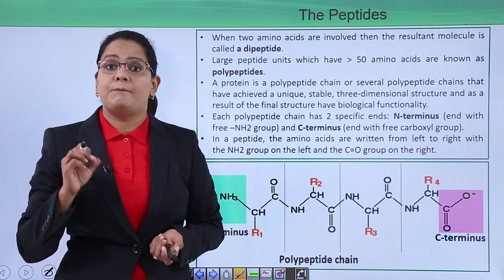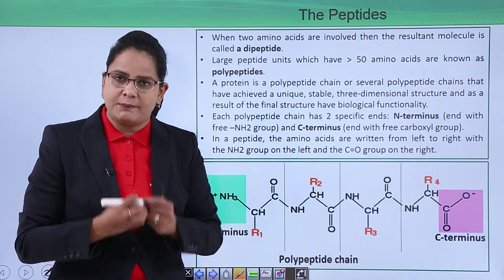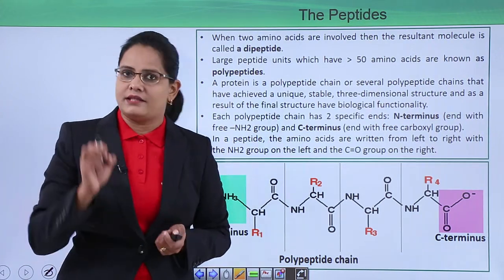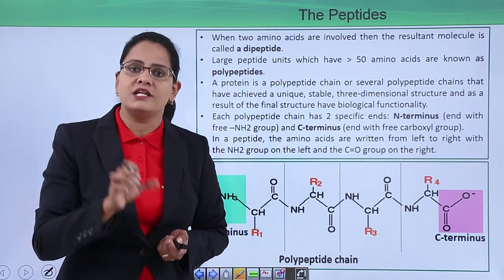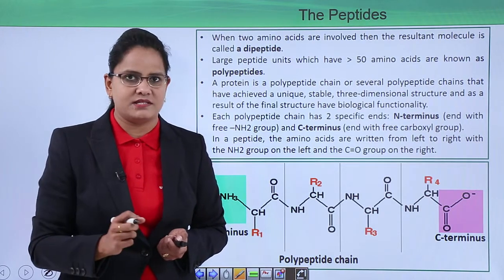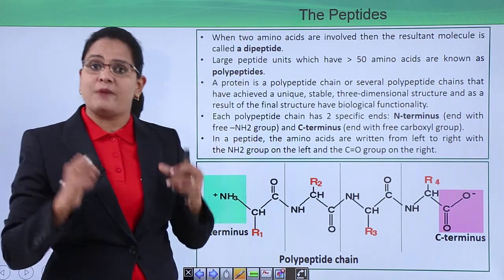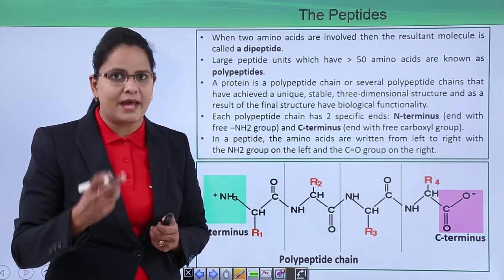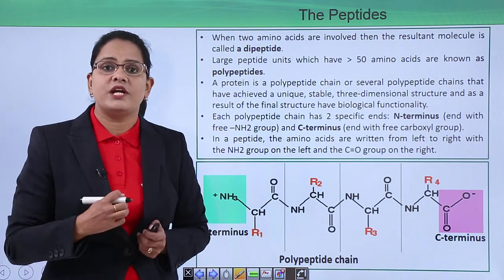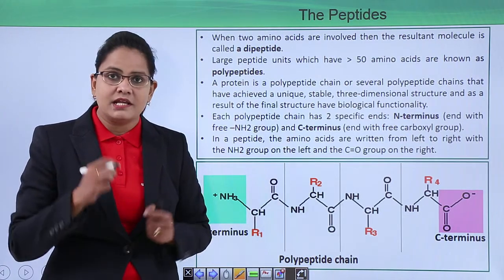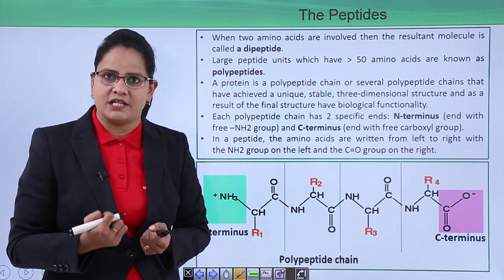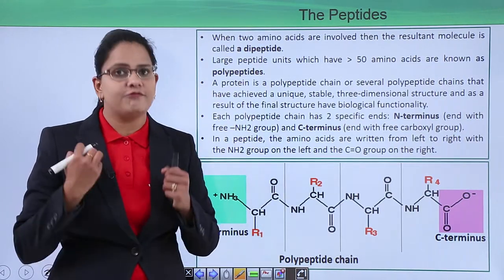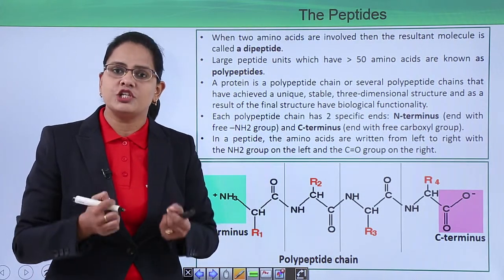By the formation of the peptide bond, peptides are formed. If only two amino acids are involved, the entity formed is known as a dipeptide. If a large peptide is formed — that is, greater than 50 amino acids — it is known as a polypeptide. A protein is a single polypeptide or many polypeptides which undergo three-dimensional folding and coiling to form a biologically functional structure.